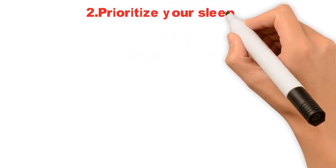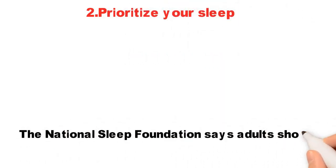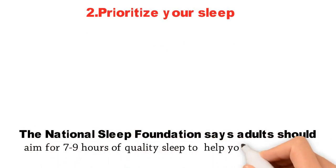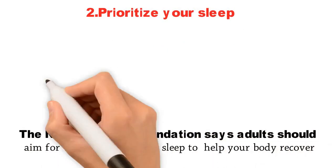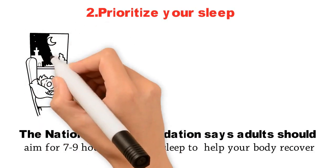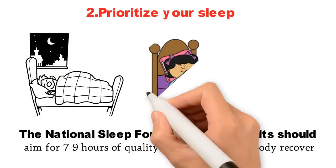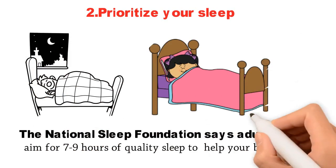2. Prioritize your sleep. The National Sleep Foundation says adults should aim for 7 to 9 hours of quality sleep to help your body recover. Sleep debt isn't recovered from one good night. Make sleep a priority and set regular bedtimes and wake-up calls.